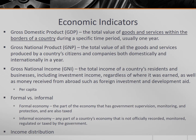But businesses and residents' productive activities often occur in more than one country. So we can examine the gross national product, or GNP, which is the total value of all the goods and services produced by a country's citizens and companies, both domestically and internationally, in a year. This reflects a country's real value because it's all the value that flows back to a country, regardless of the location in which it is produced.